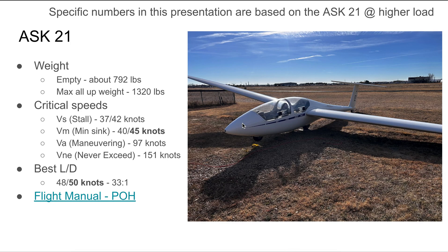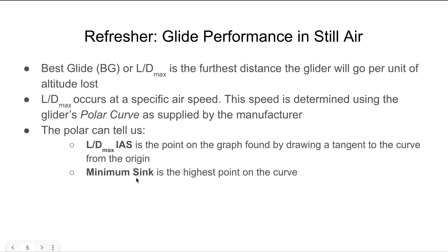As a quick note, the numbers in this presentation are based off of the performance numbers of an ASK21 at a higher wing loading to make some nice easy numbers. In particular, we are looking at a min sink of 45 knots and a best L over D speed of 50 knots. Every glider has a best glide or L over D max, which is the furthest distance forward it can go for a unit of altitude lost, and this can be determined by looking at the polar curve published by the manufacturer.